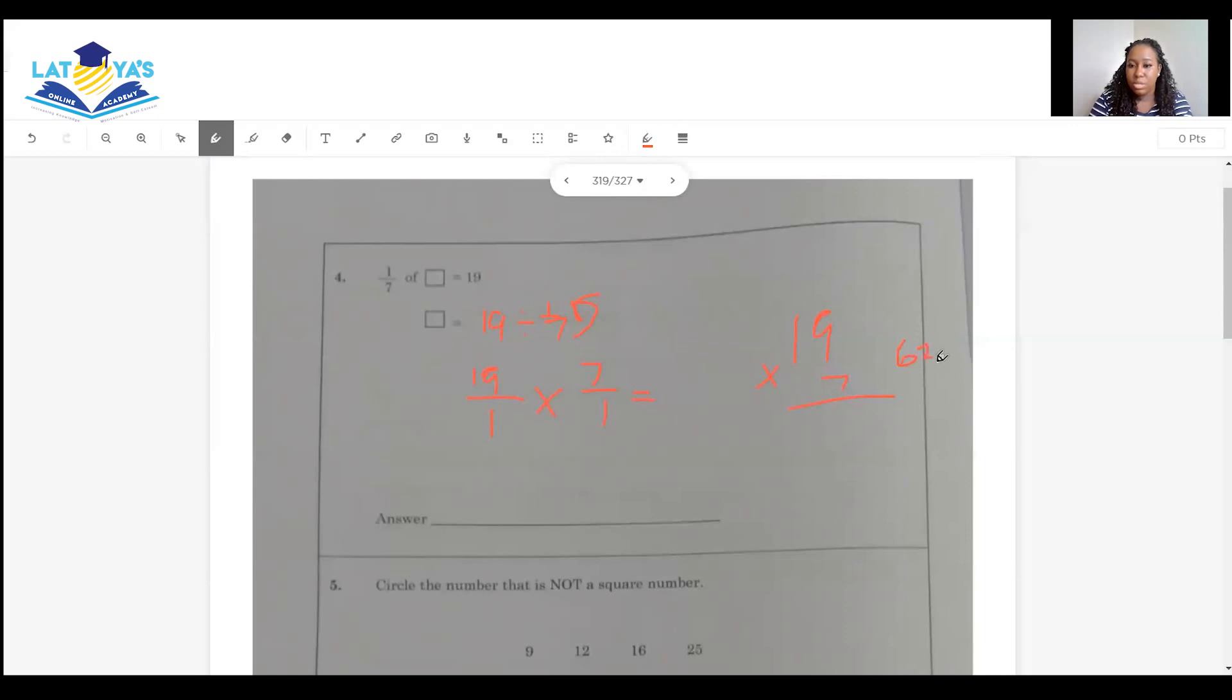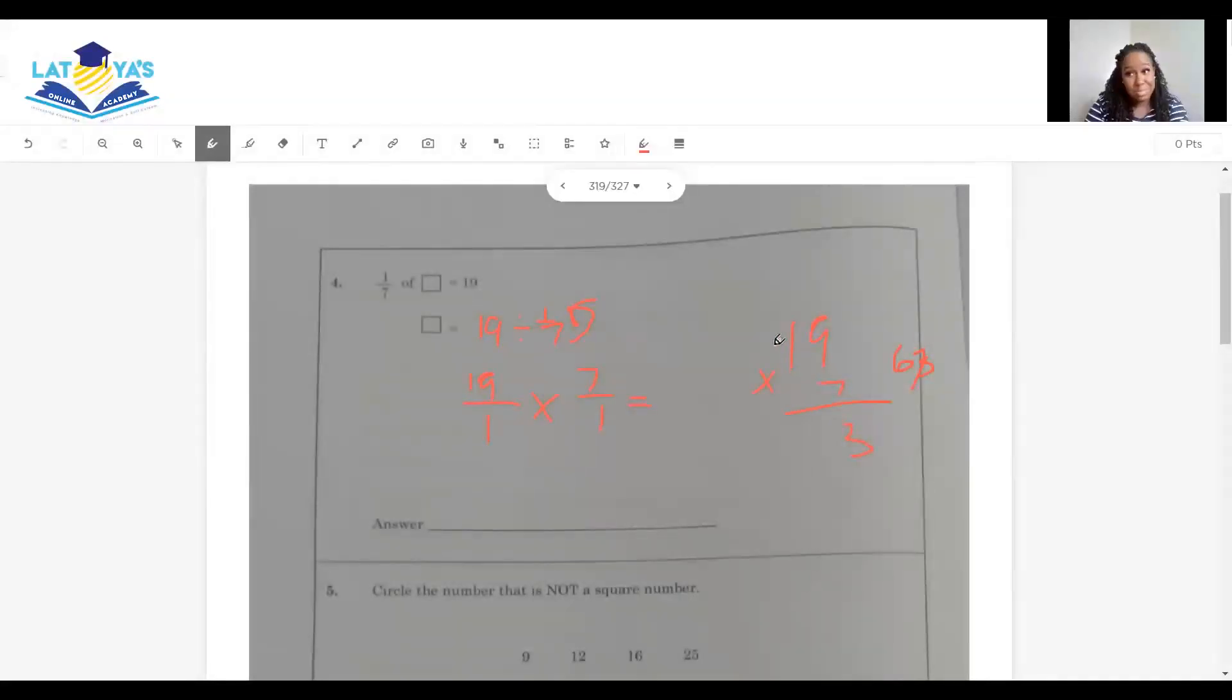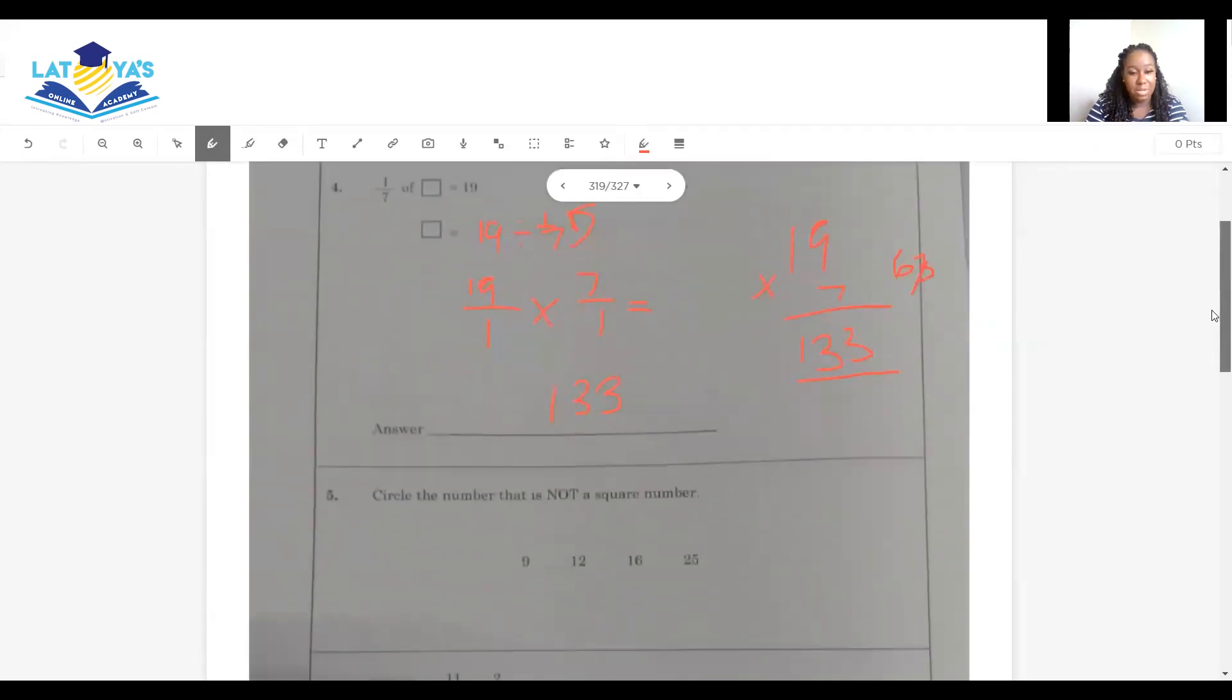And if you don't know 19 by 7, you go to your working column and you work it out. 7 nines are 63. Carry my 3, put it here. 7 times 1 is 7. Plus 6 is 13. So my answer is 133. So 133 is what is missing from this box.